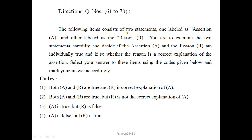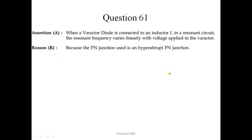From question number 61 to 70 there is an assertion-reason format. Each item has two statements: one labeled assertion and one labeled reason. Select answer 1 if both A and R are true and R is the correct explanation of A; select 2 if both are true but R is not the correct explanation; select 3 if A is true but R is false; and select 4 if A is false but R is true.